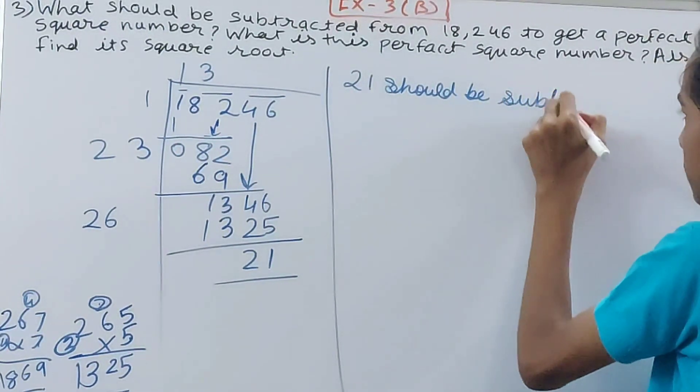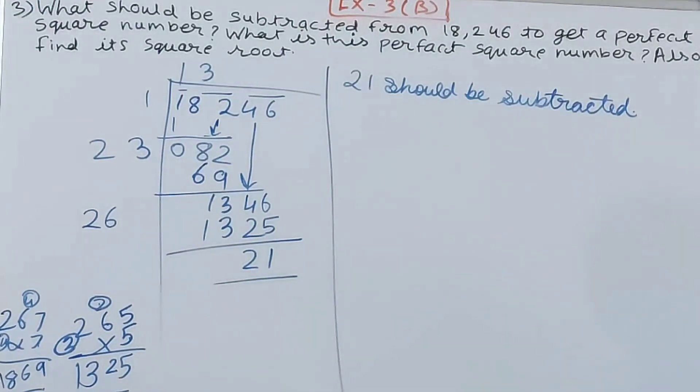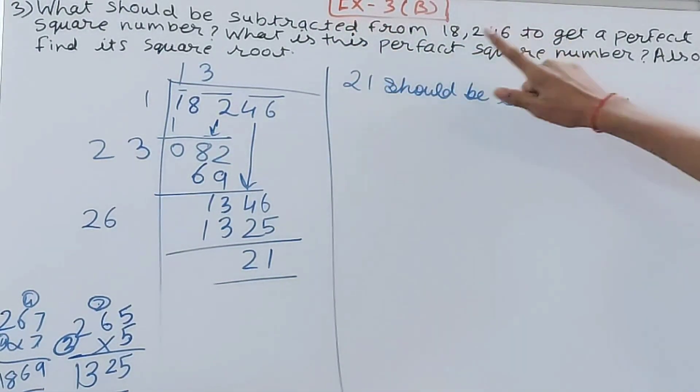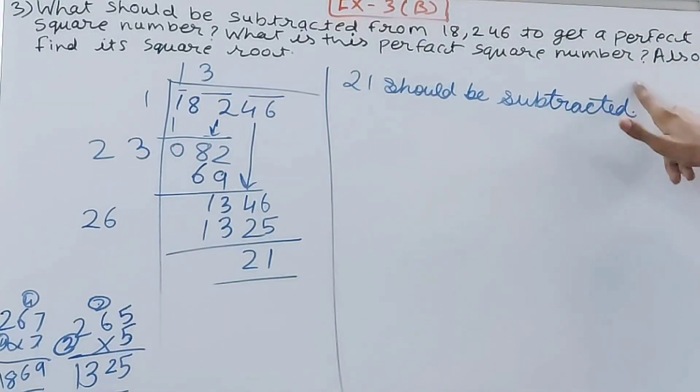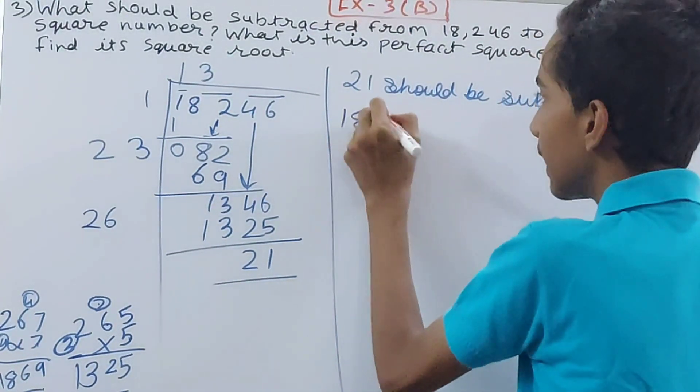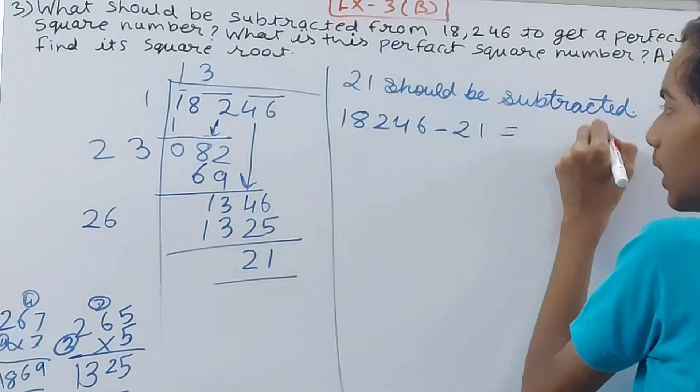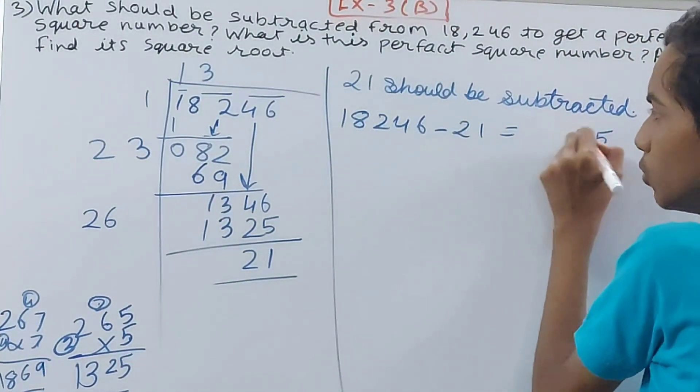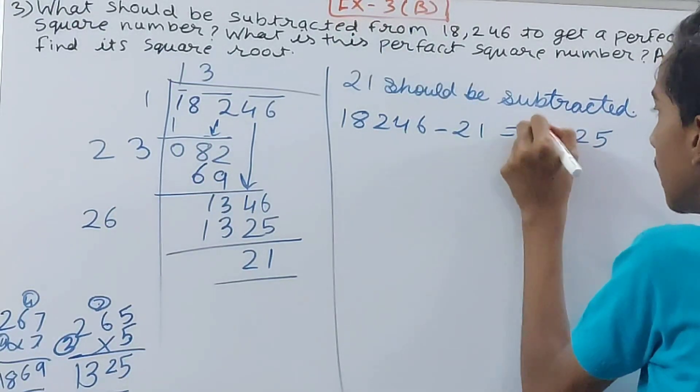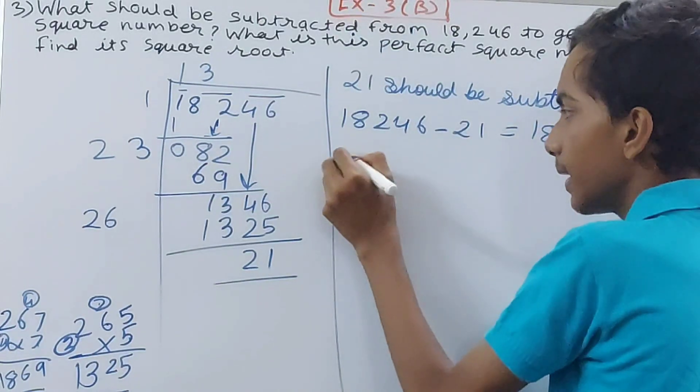Okay, so it will be subtracted. Now what has it asked? What is this perfect square number? So let's subtract 21 and let's see what number do we get. 18,246 minus 21 becomes 5, 2, 2, 1 and 8. This it becomes, right? So the perfect square is 18,225.